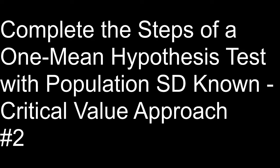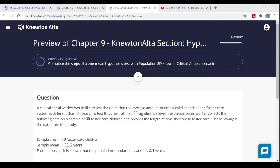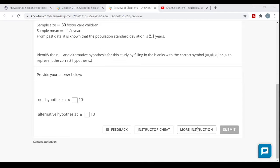This uses the critical value approach — finding critical z-scores, setting a rejection region, and determining whether the test statistic falls in the rejection region or not. I've already done one video on this type of problem; this is a second example. Hopefully watching both helps you when working on problems on your own. If you're still having trouble, look at more instruction, videos, examples, and notes.